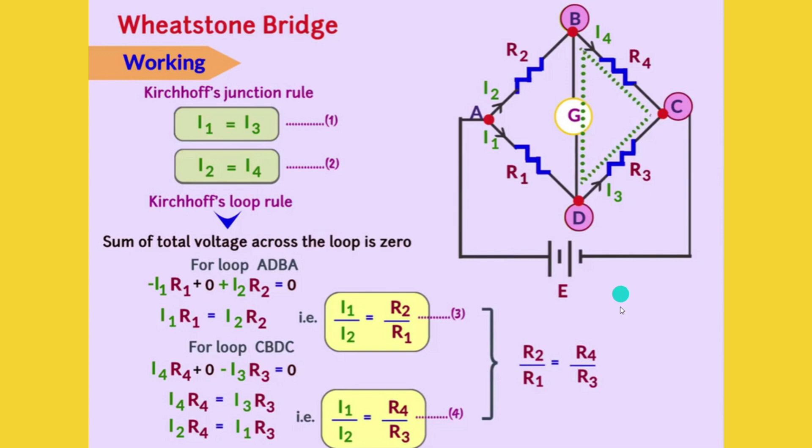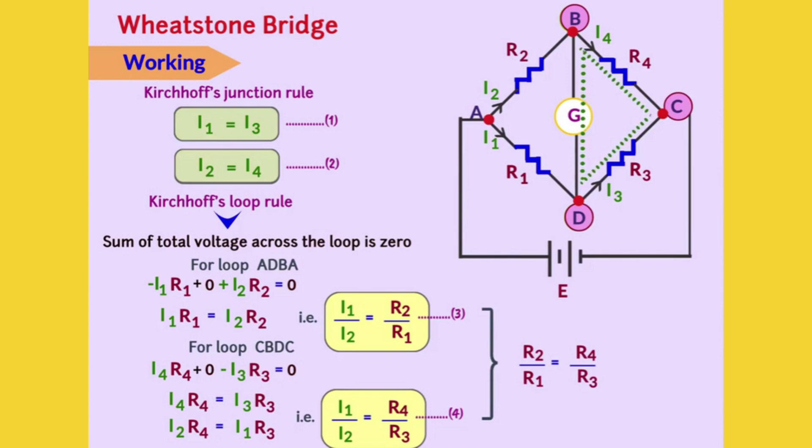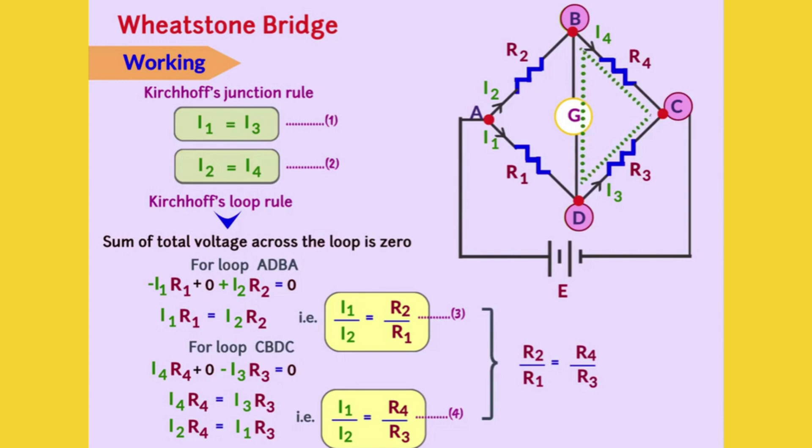If we equate equations 3 and 4, then we can derive the equation R2 by R1 equals R4 upon R3. Assuming that the unknown resistance is R4, we can easily find its value by using the formula R4 equals R2 into R3 upon R1.